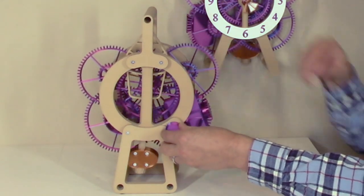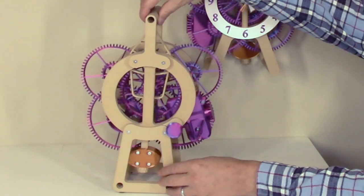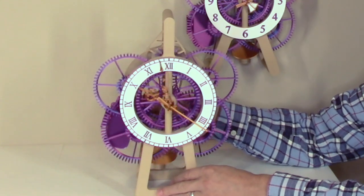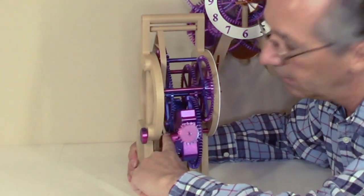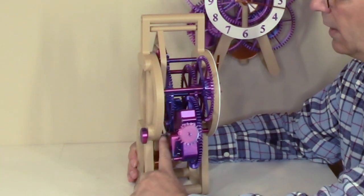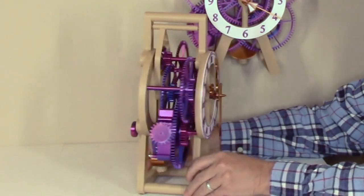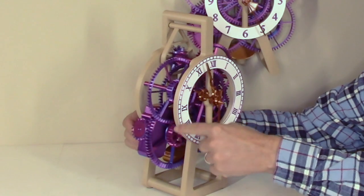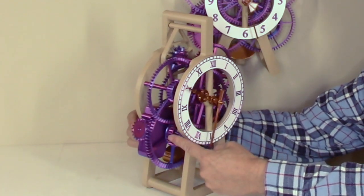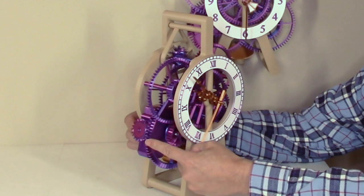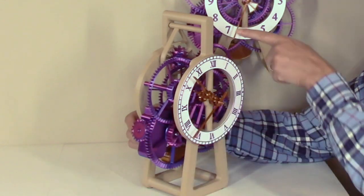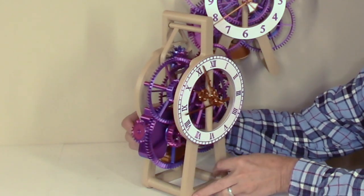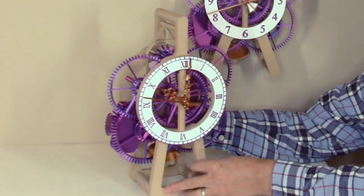One thing you also notice is this clock has a knob on the back, and that can be used to change the time on the clock. Right here is a little spring from a ballpoint pen that creates a friction clutch. That allows this gear to rotate but the gear that's being pushed by the motor continues to drive the escapement. So the time can be set by allowing this gear to rotate, and the clock still operates while you're changing the time.